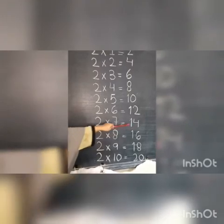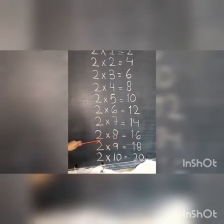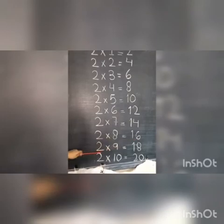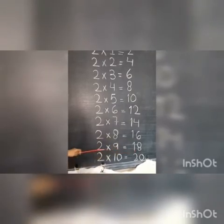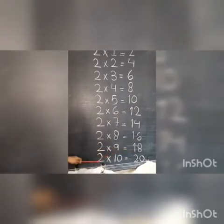2 times 7 is 14, 2 times 8 is 16, 2 times 9 is 18, 2 times 10 is 20.